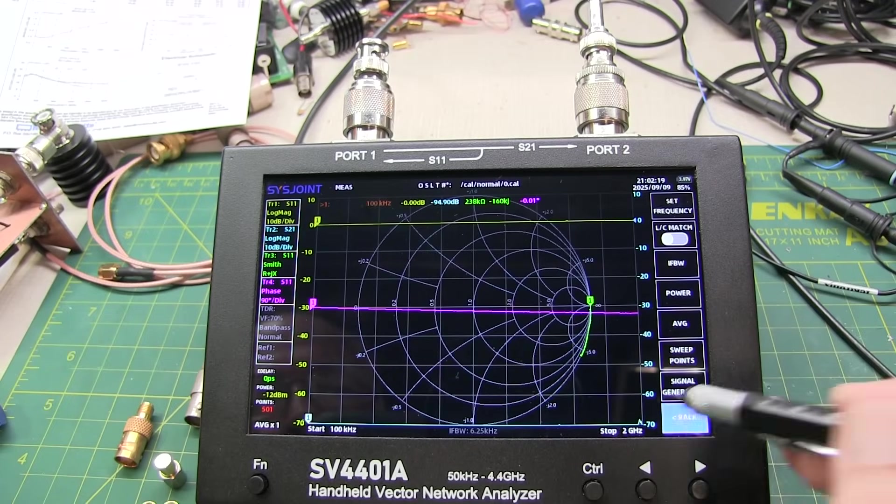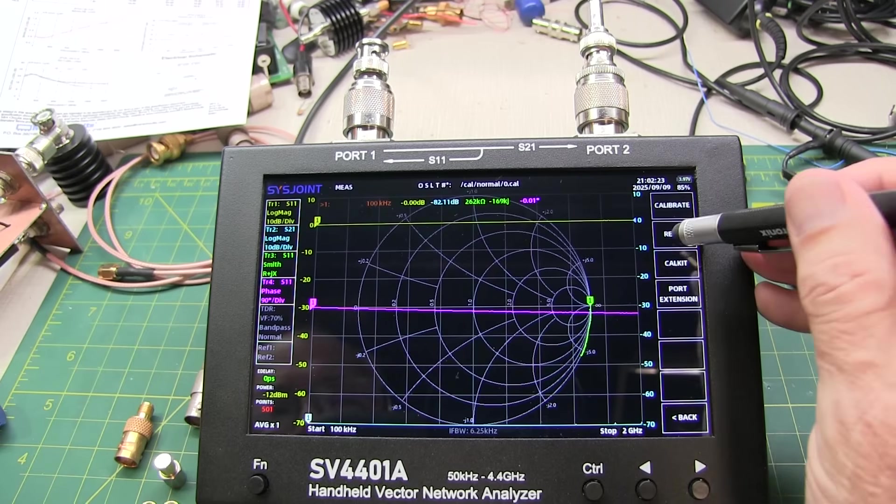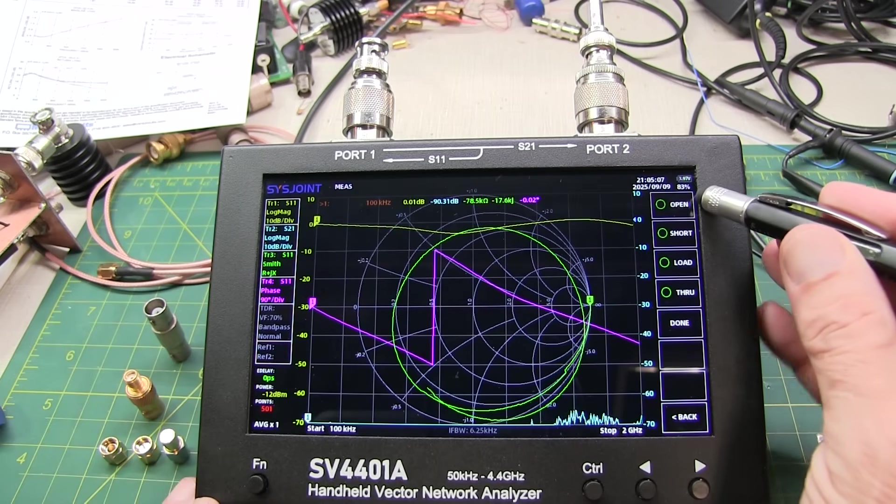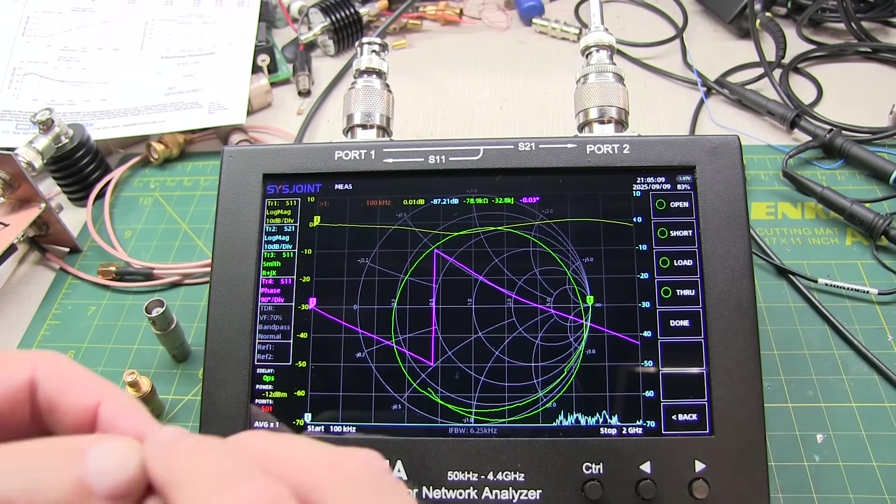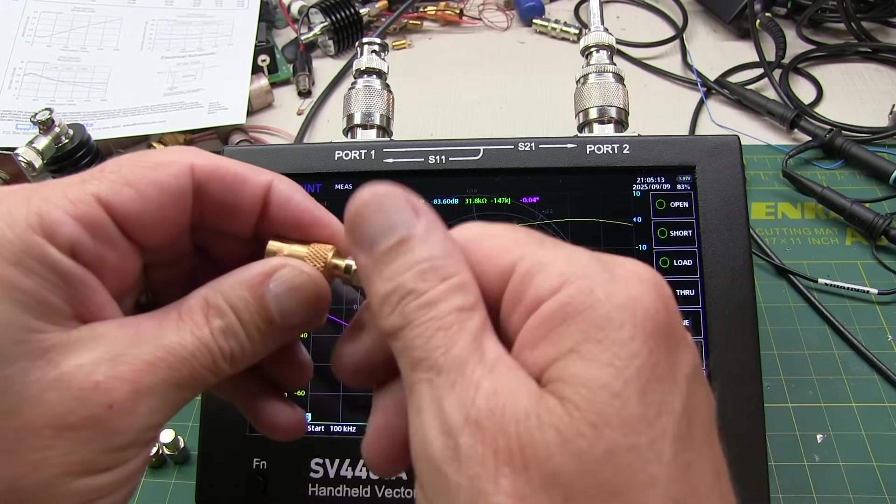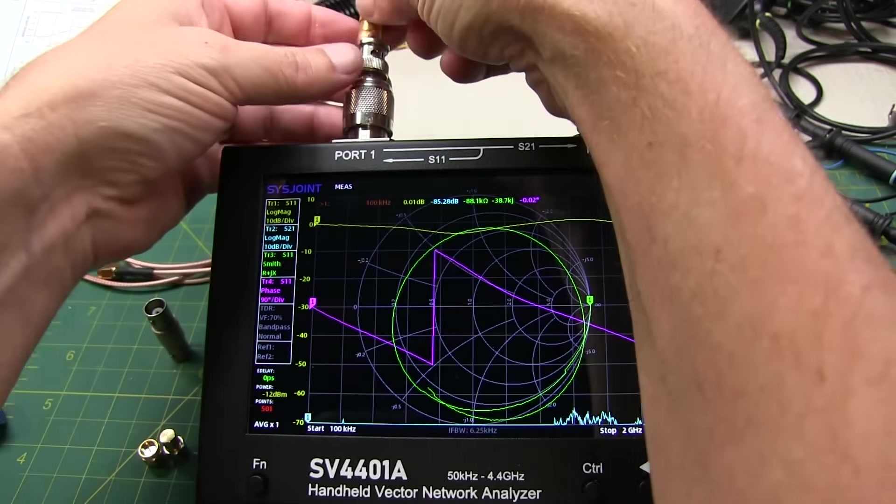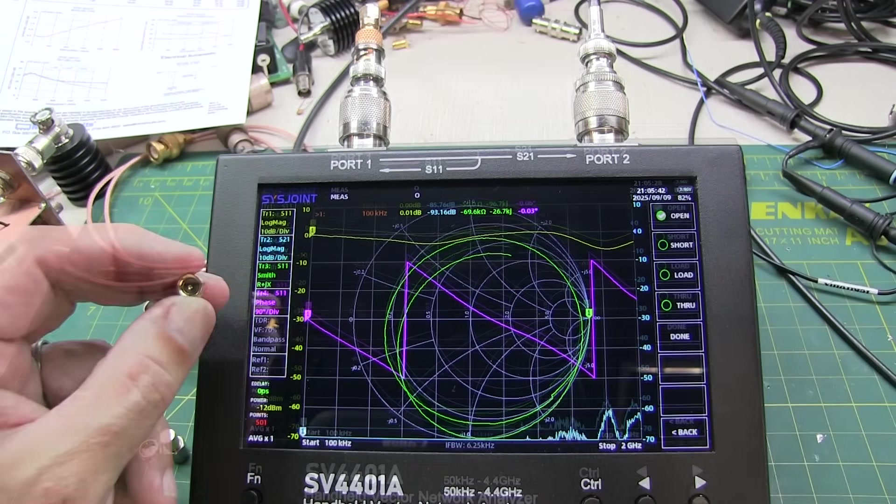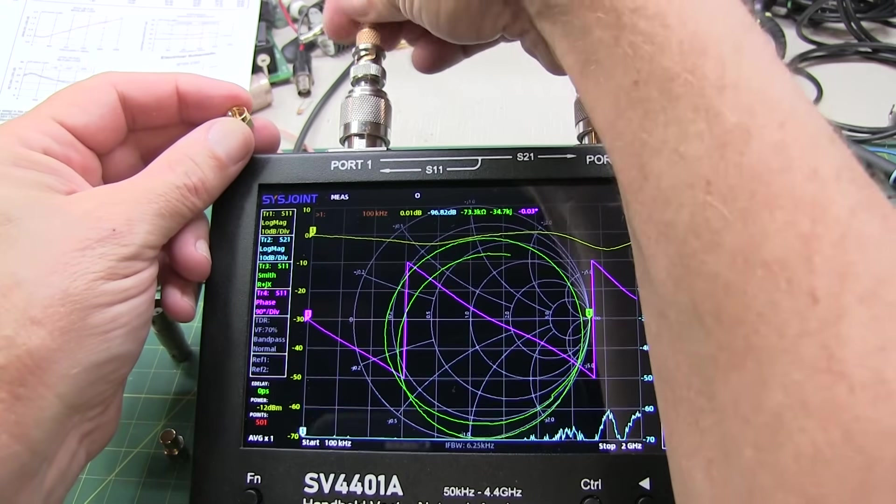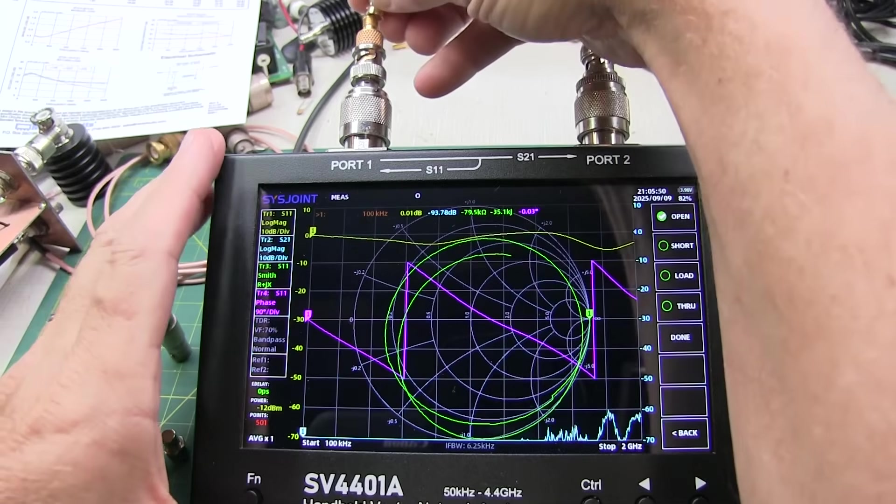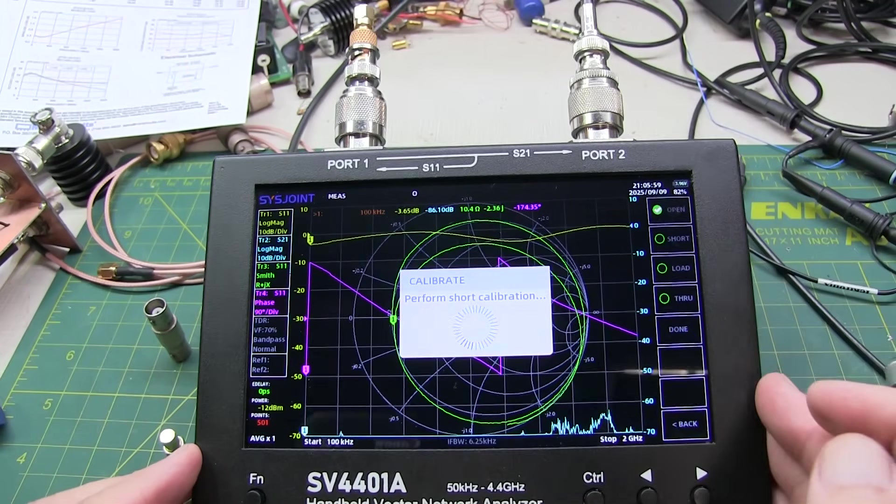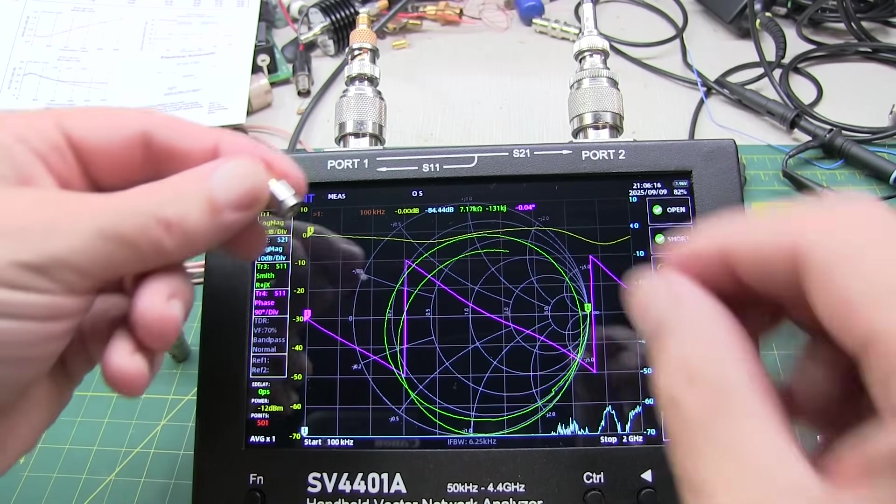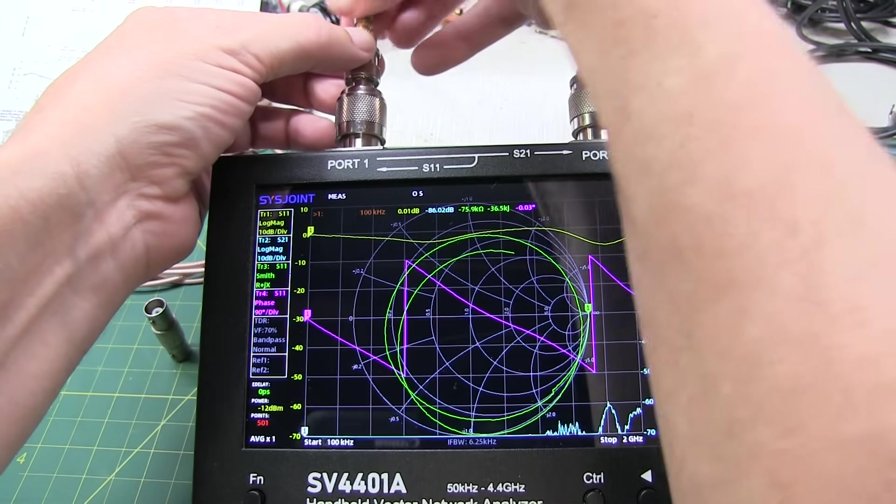Okay, to start the calibration process, make sure we're back up at the top menu. And we'll hit Cal, and hit Reset to clear the calibration that's currently being used. So next we hit Calibrate. And we're going to start off by calibrating with the open. So I'm going to take my SMA open, and connect it up to my SMA to BNC adapter. And connect that up to BNC adapter. And then hit Open. And let that run through its sweep. Next we take the SMA short, and put that on the end of the adapter here. And hit Short. And then remove the short, and take our SMA 50 ohm standard, and stick that on the adapter, and hit Load.